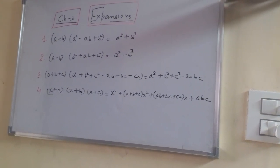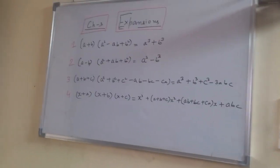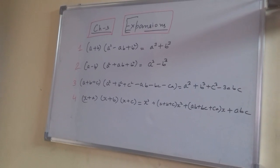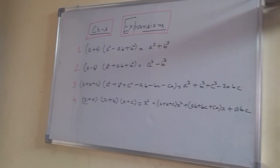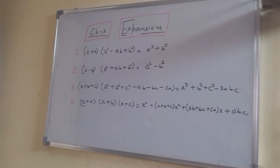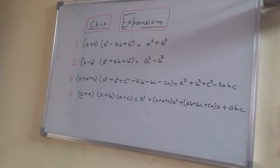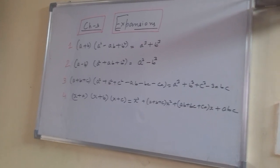The first formula is: (a + b) multiplied by (a² - ab + b²) is equal to a³ + b³.